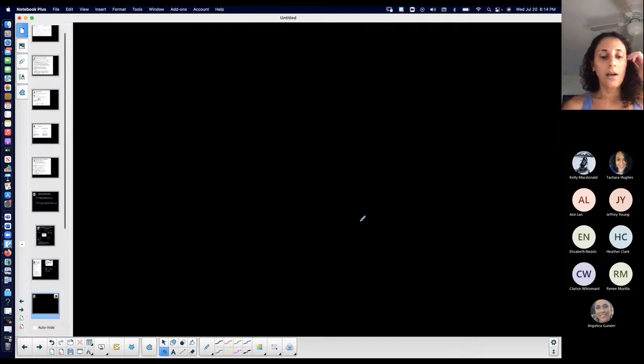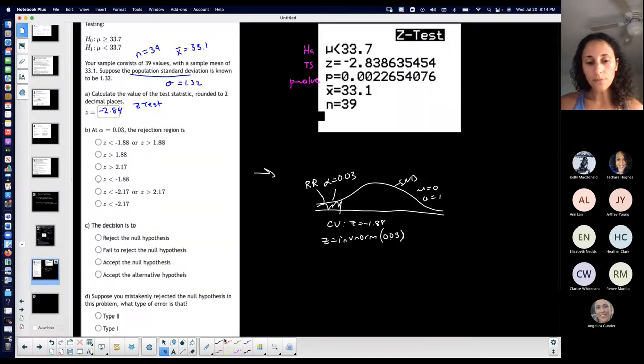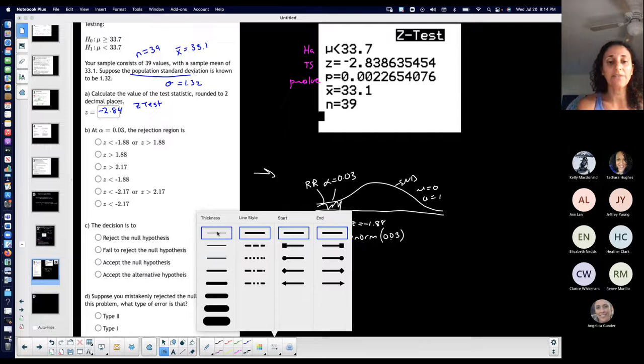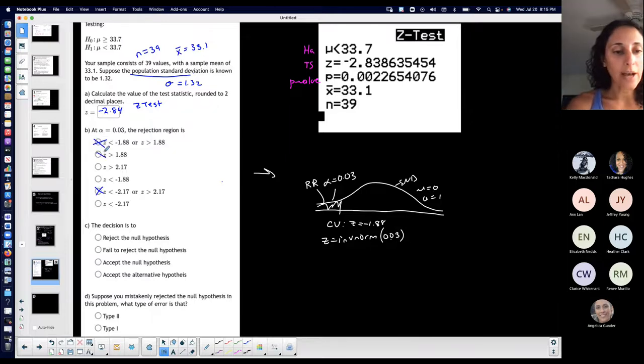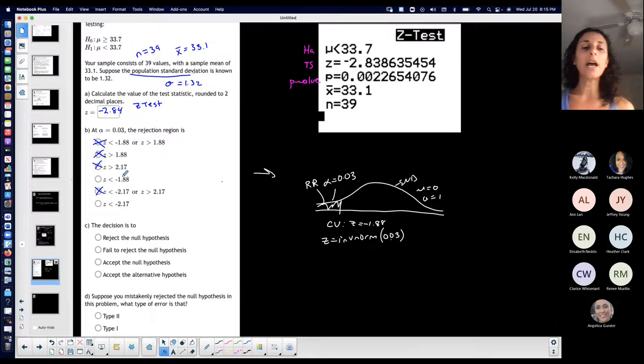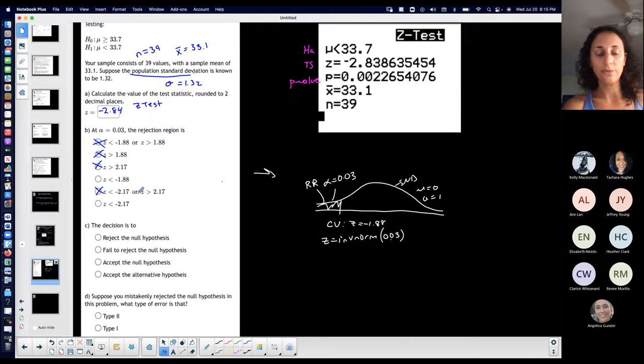Now, process of elimination, being that I know that it's a left-tailed test, I know that I'm not going to have two critical values. I know that I'm most likely not going to get a positive critical value because it is a left-tailed test. So now it's between these two. And then I know that it's this. The rejection region is to the left of the Z-score. So the rejection region is Z less than negative 1.88. So this is my answer.